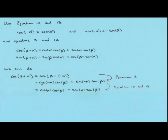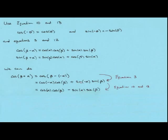That gives us cosine of minus alpha times cosine of beta plus sine of minus alpha times sine of beta. Using our odd and even identities, cosine of minus alpha is the same as cosine of alpha, and sine of minus alpha is minus the sine of alpha. This gives us a formula for the cosine of the sum of two angles.